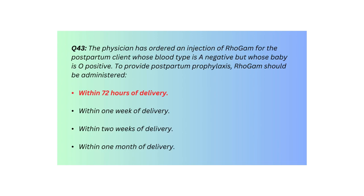Q43. The physician has ordered an injection of RhoGAM for the postpartum client whose blood type is A negative but whose baby is O positive. To provide postpartum prophylaxis, RhoGAM should be administered: within 72 hours of delivery, within 1 week of delivery, within 2 weeks of delivery, or within 1 month of delivery.